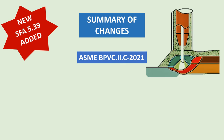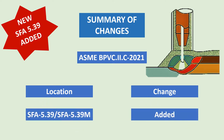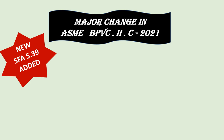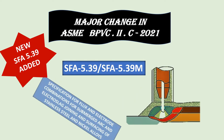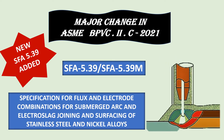A whole new SFA number has been added. It is SFA 5.39. SFA 5.39 is the specification for flux and electrode combinations for submerged arc and electro-slag joining and surfacing of stainless steel and nickel alloys.